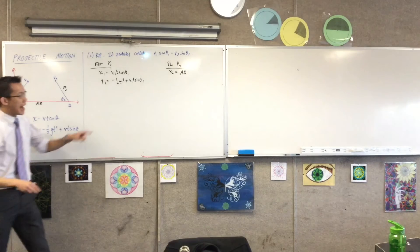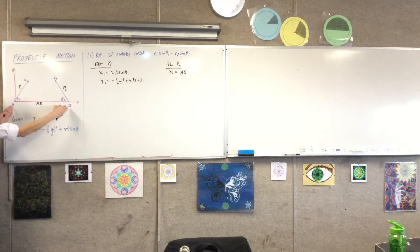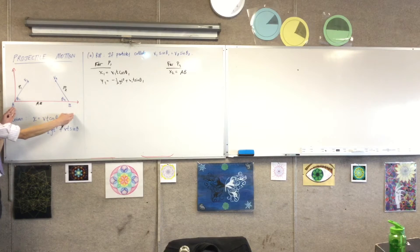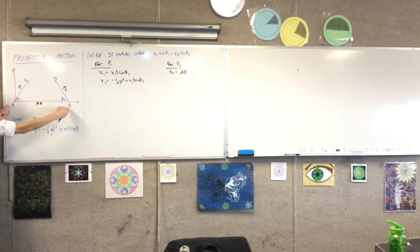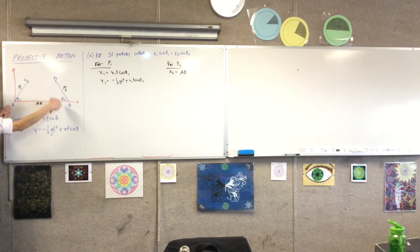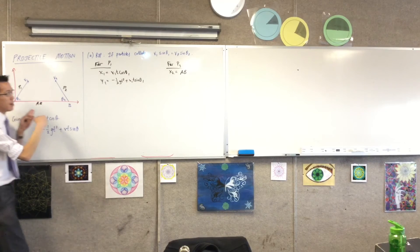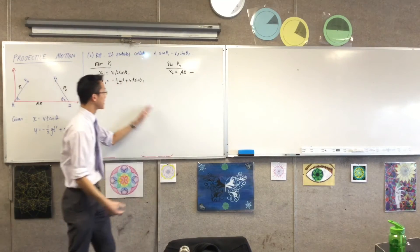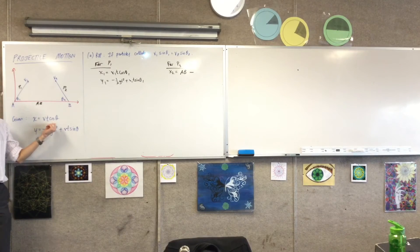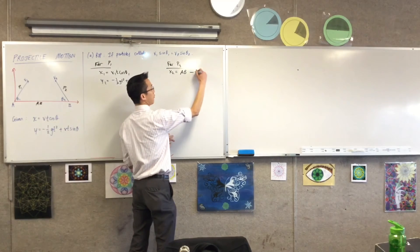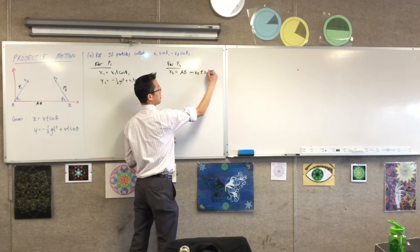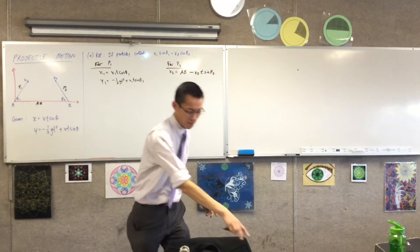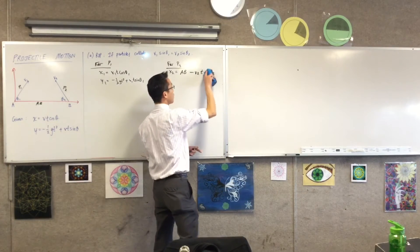In the same way though, as time progresses, what happens to the horizontal position of particle two? It's getting smaller, isn't it? It's going in this direction. So this total length, wherever P2 is, it's getting smaller. To make it smaller, I clearly must subtract. But what I'm subtracting is the distance that I've traveled, which is this, generally speaking. So therefore, it's going to be V2 time sine of theta two. Oh, sorry, cos, yeah. I'm thinking horizontally, not vertically.